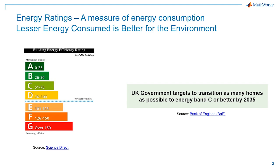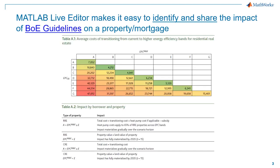The UK government plans to transition as many homes as possible to energy band C or better by 2035. To achieve this, the UK government is subsidizing the installation of more efficient heat pumps. Moving a property from an energy rating of, say, F to another energy rating of, say, B, incurs costs as outlined in the climate BIENNIAL exploratory scenario laid out by the Bank of England. The costs include improving insulation and upgrading heating. There are also subsidies that homeowners could take advantage of.